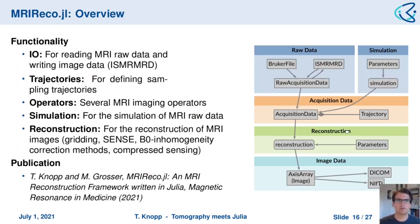Now I want to go into more detail on MRIReco.jl, which is for magnetic resonance imaging. We implemented file formats such as ISMRMRD and the Bruker file format, different trajectories, operators, a simulation framework, and a reconstruction framework — for details I refer to our recently published MRM paper. Starting with reading raw data from file, we load it into an acquisition data object with special types representing the data, including the sampling trajectory. This is then passed to the reconstruction method together with a parameter dictionary for customization.